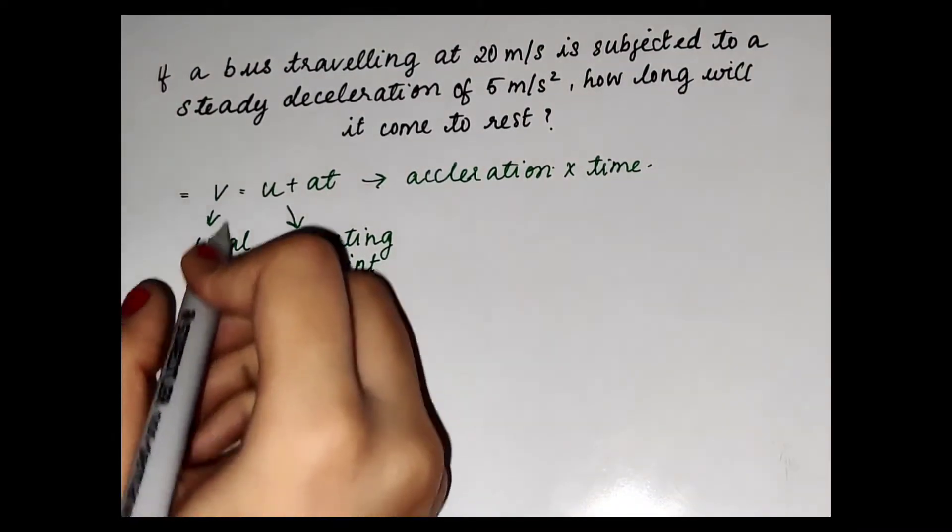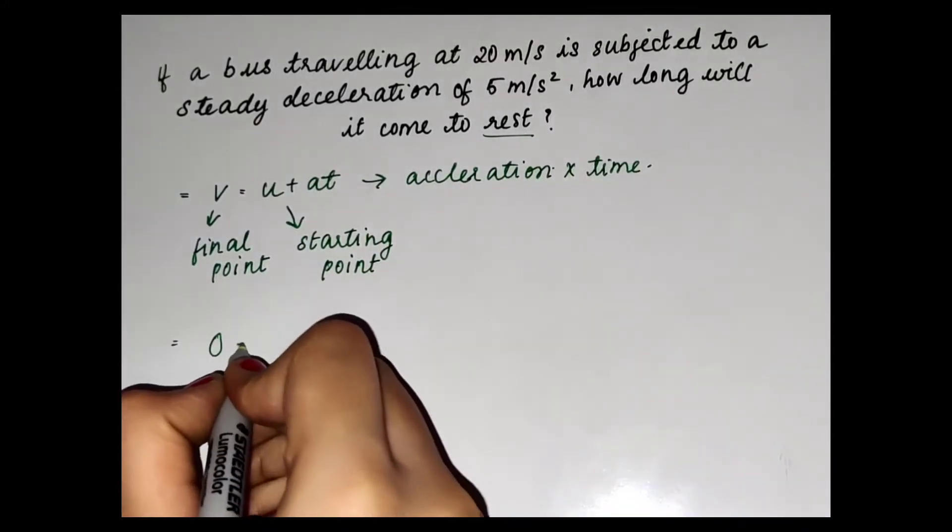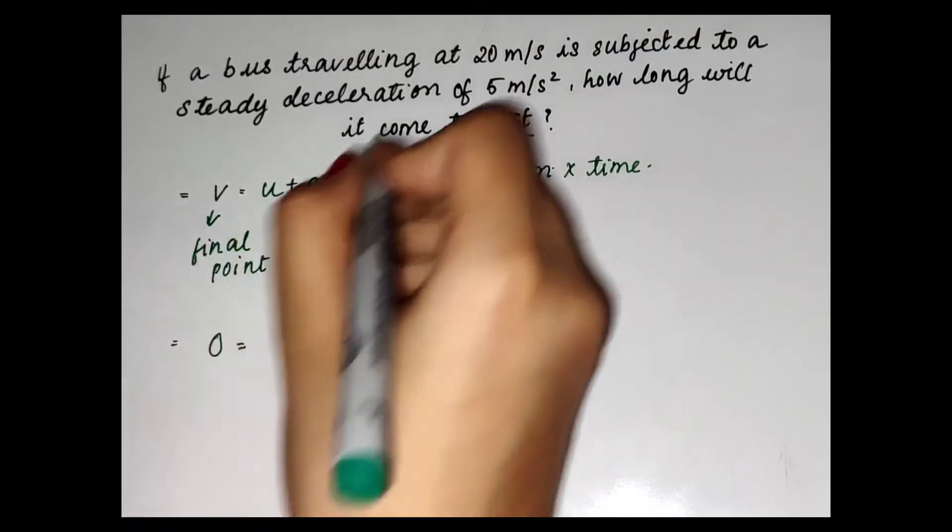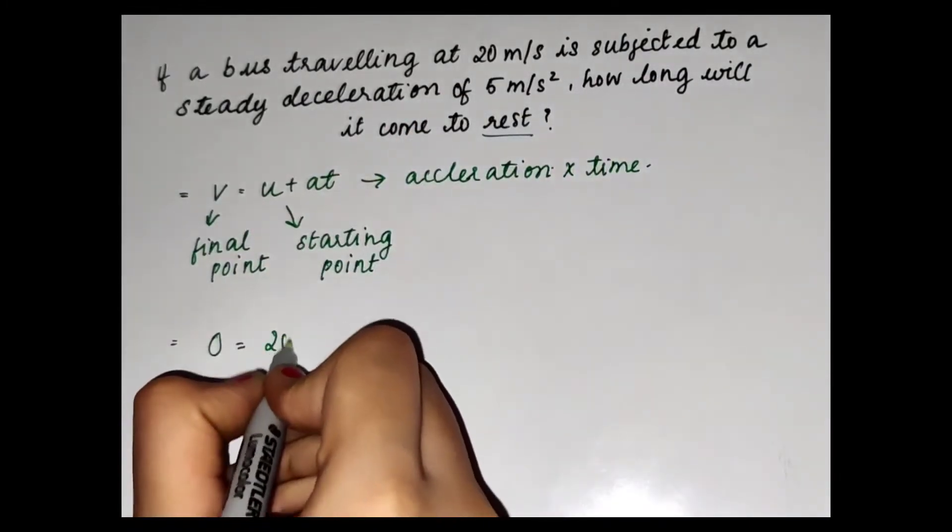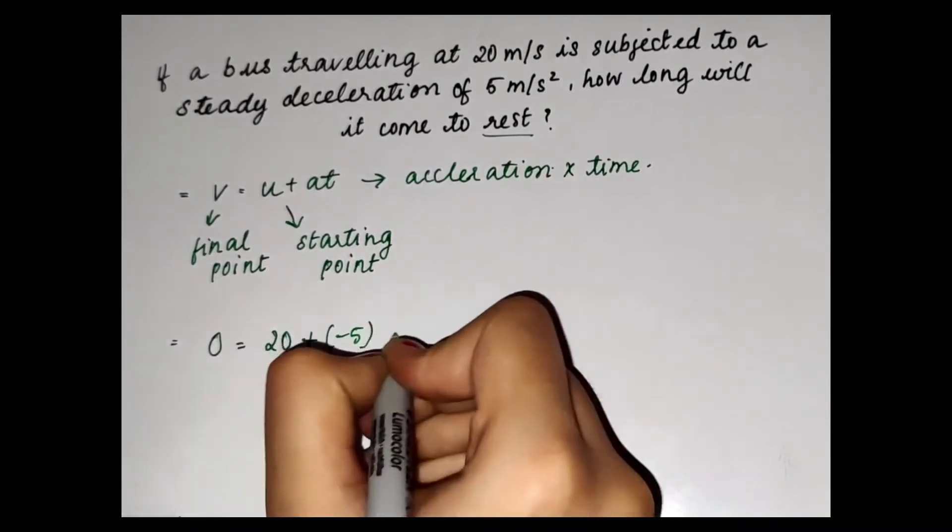In the question, they have mentioned rest, so the final velocity will be 0. u equals 20 and a equals minus 5 because it is deceleration, so we have written minus 5 and time is t.